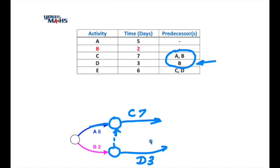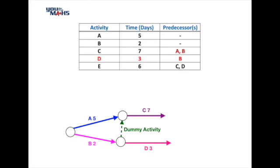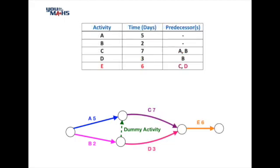Now let's look at how we complete the rest of the diagram. The last task to place is activity E, which requires predecessors C and D. So we bring the arrows together for the two activities C and D, place a node there, and E can come off that. There are no more activities to be shown, so that completes the drawing.